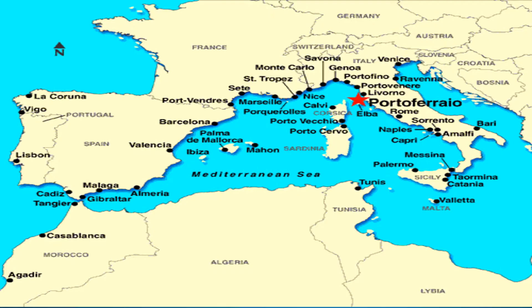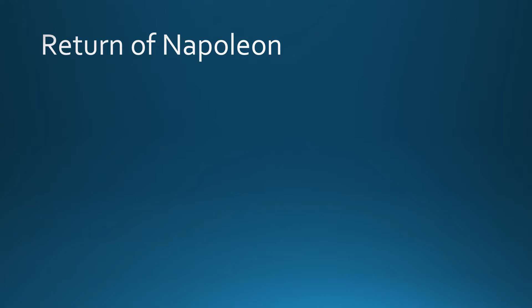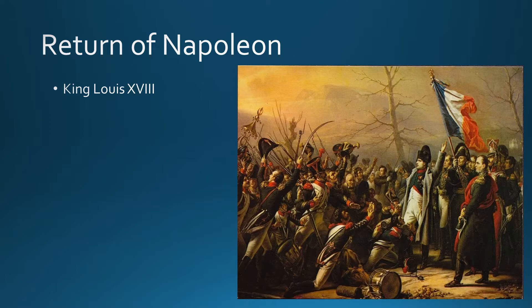Elba is this small island in the Mediterranean — not too far away from France. This is significant because Napoleon is going to try to return in less than a year's time.